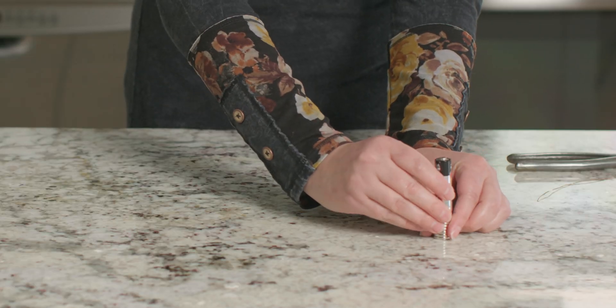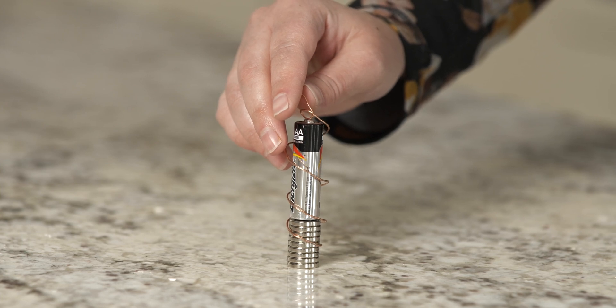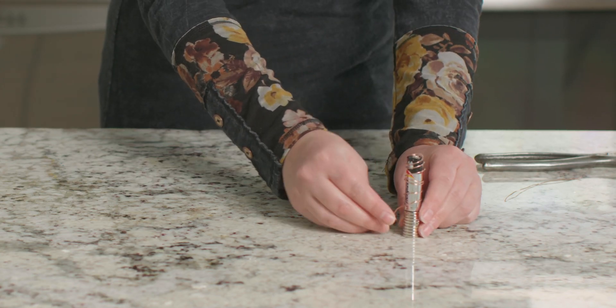All right, we're ready to carefully slide our wire coil back on top of our battery. Our loop should rest on the positive terminal and the end of the wire should just slightly touch the magnet at the bottom.